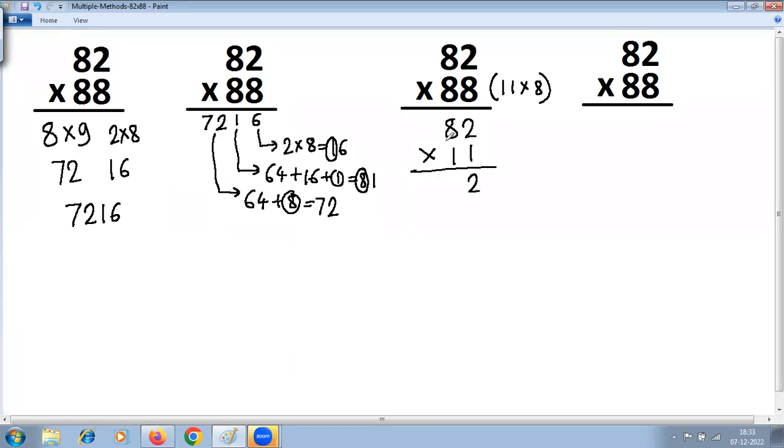Series of 1: 8 plus 2 is 10, so 0 carry 1, 8 plus 1 is 9. So we have done 82 into 11. Further, you have to multiply it by 8.